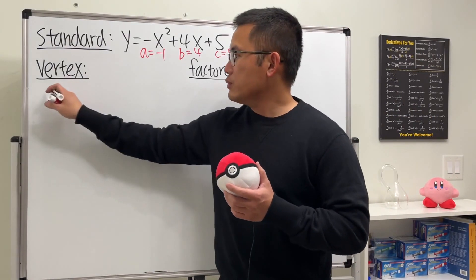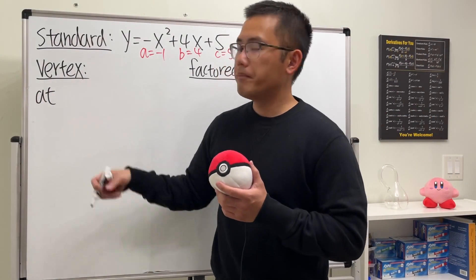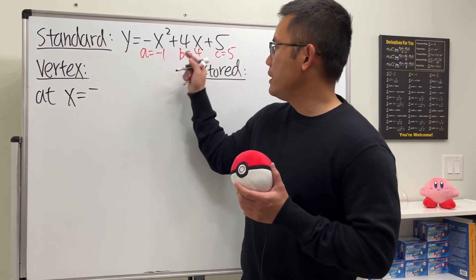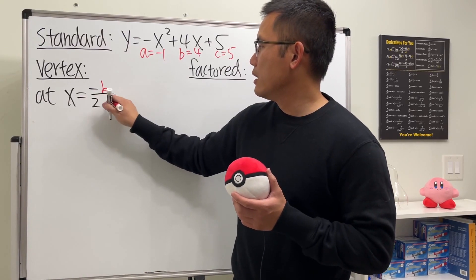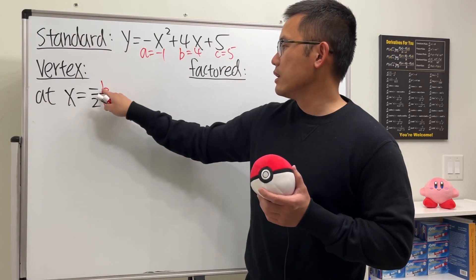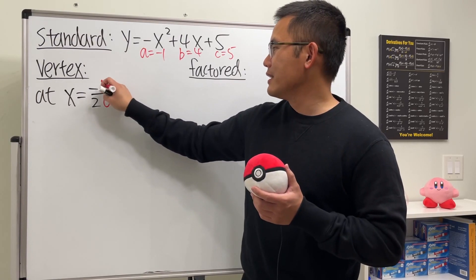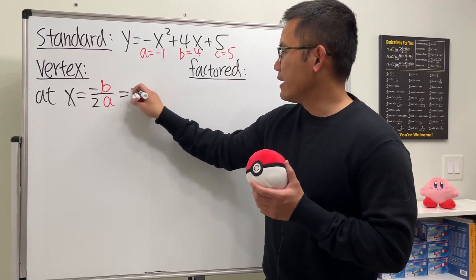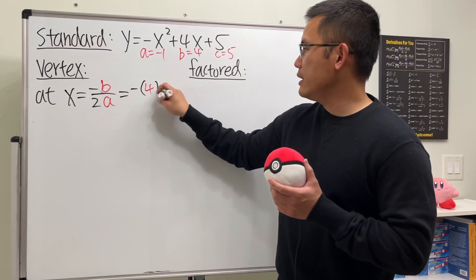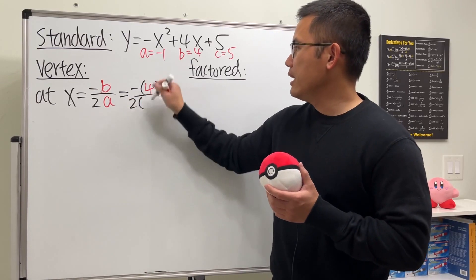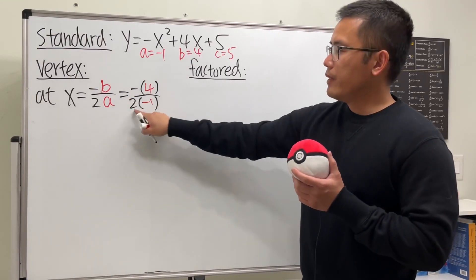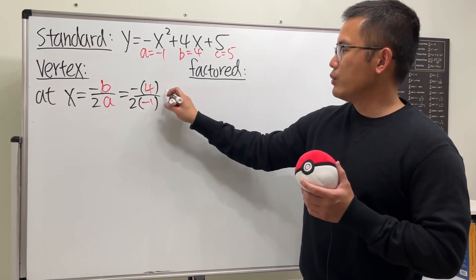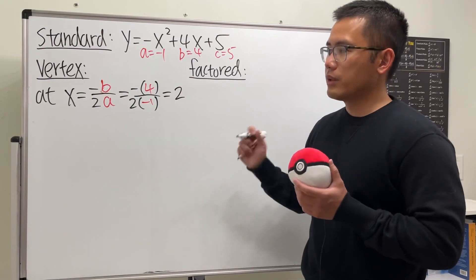Let's get the vertex first. We will use the vertex formula: x equals negative b over 2a. This is a formula we can utilize because we're given the equation in standard form. We have negative 4 over 2 times negative 1, which is negative 4 over negative 2, giving us positive 2. So the x value of the vertex is 2.